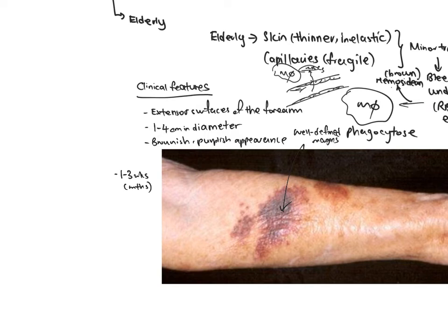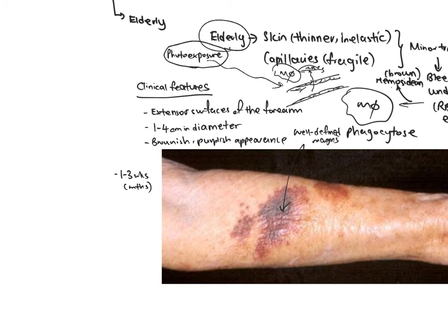Sometimes sunlight — excessive photoexposure — can also damage the capillaries. So sunlight as well as aging contributes largely to the pathophysiology of this condition. Apart from the forearm, the neck and face could also be affected, but they are generally less common.